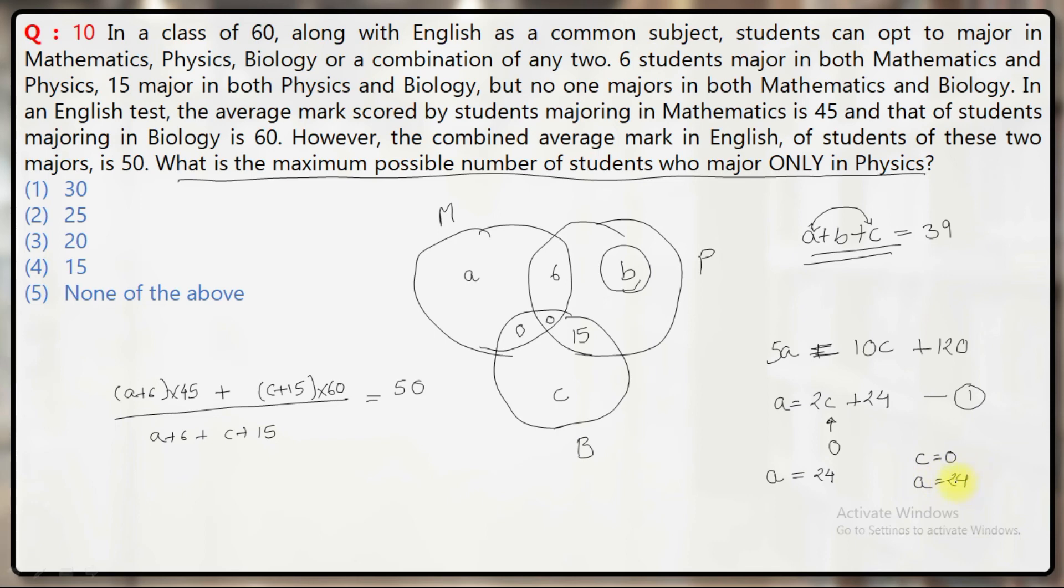The maximum possible value of b: I'll put a equals 24 and c equals 0, so b equals 39 minus 24, which equals 15. So the maximum possible number of students who major only in Physics (along with English) is 15. My answer is option 4.